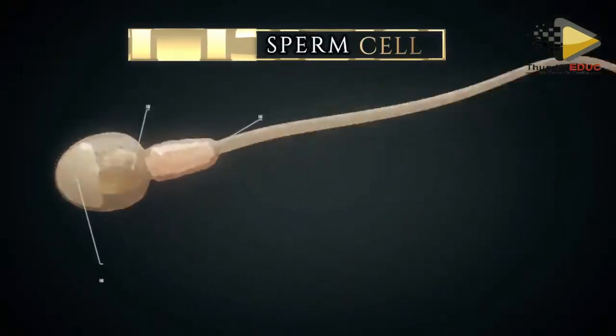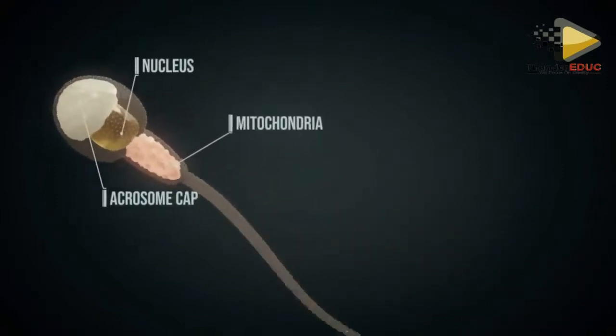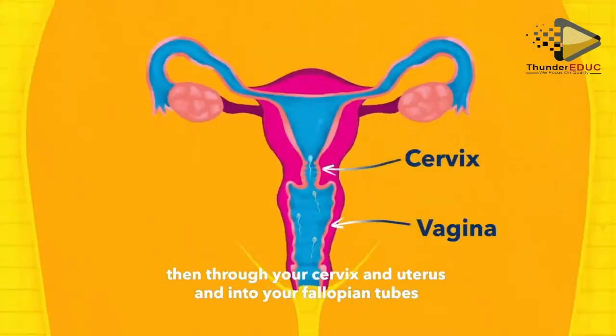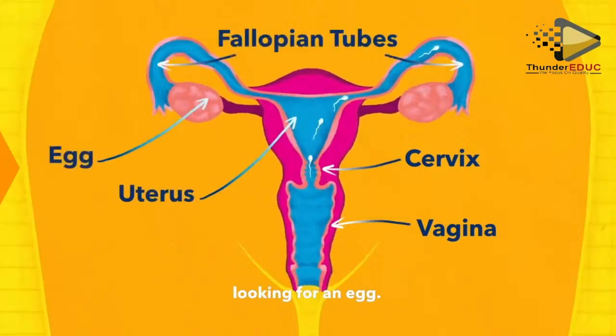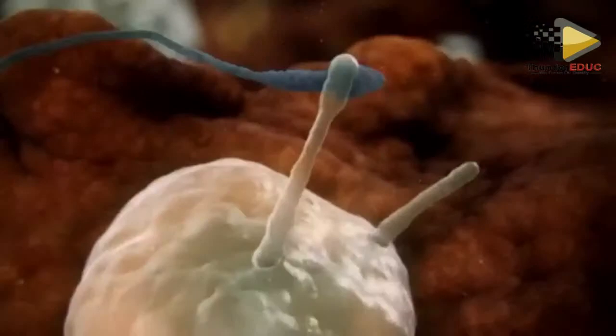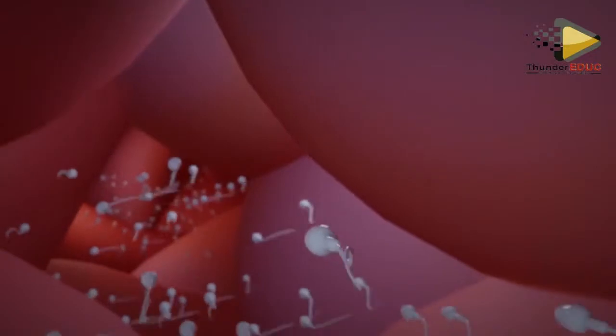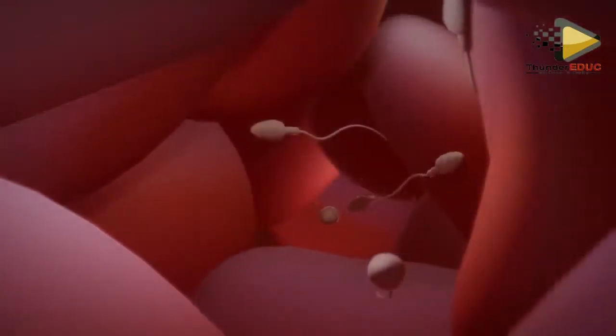The sperm has three parts, which enable it to swim and fertilize the ovum. However, the immune system of the female identifies sperm as foreign. That is why over 300 million sperm are produced in a single ejaculation, so that a few millions can survive to reach the fallopian tube.